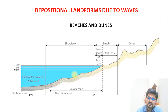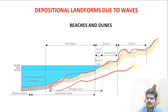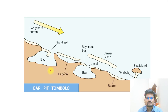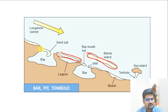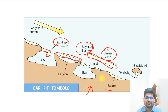Wave depositional landforms include beach dunes, backshore deposits, and various beach features. Beaches and dunes are part of wave deposition. Sandbars deposited in bay areas take different forms and names: sandpit, Weymouth bar, barrier island, and tombolo. These will be discussed in detail when we cover coastal landforms.